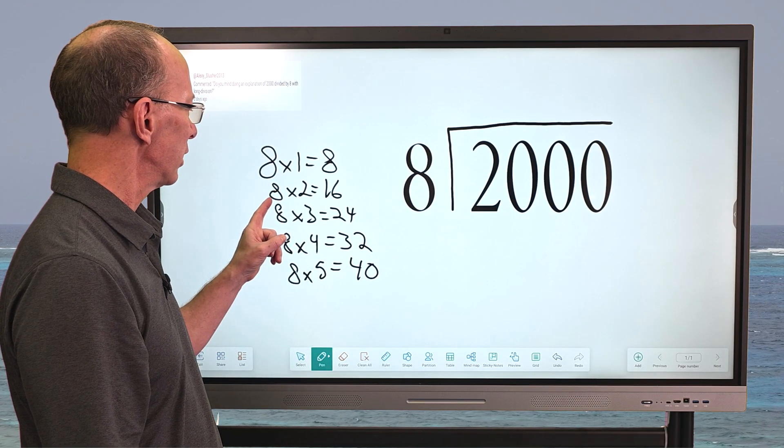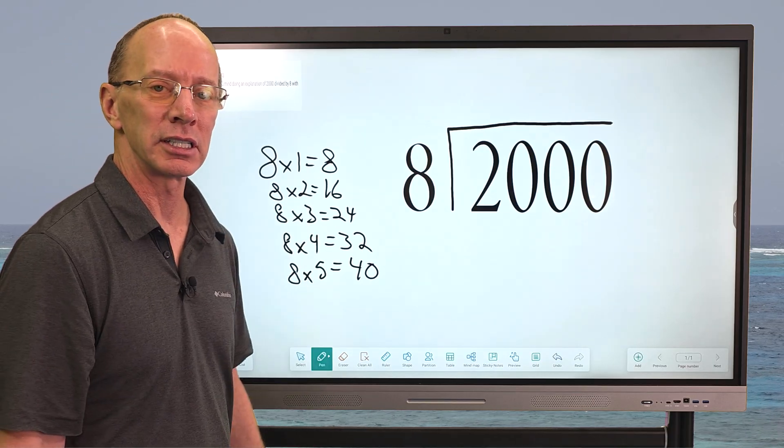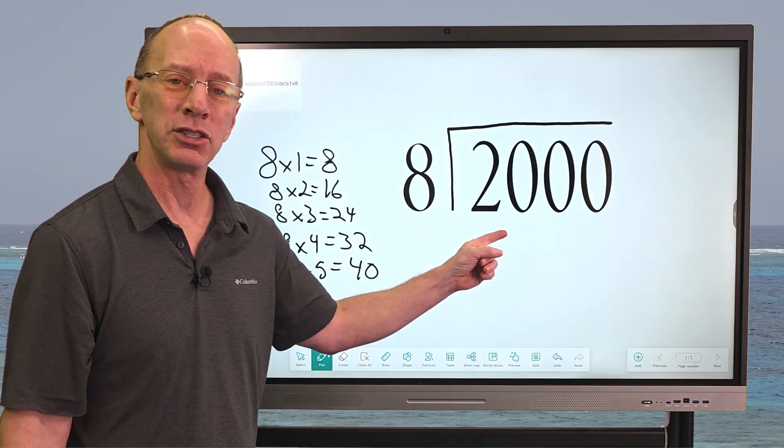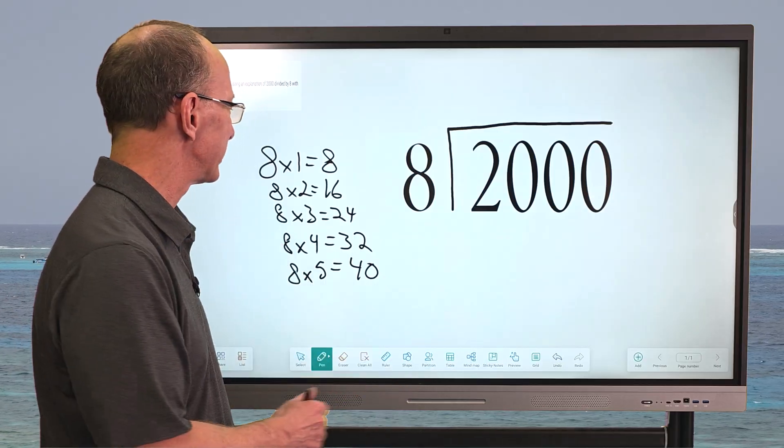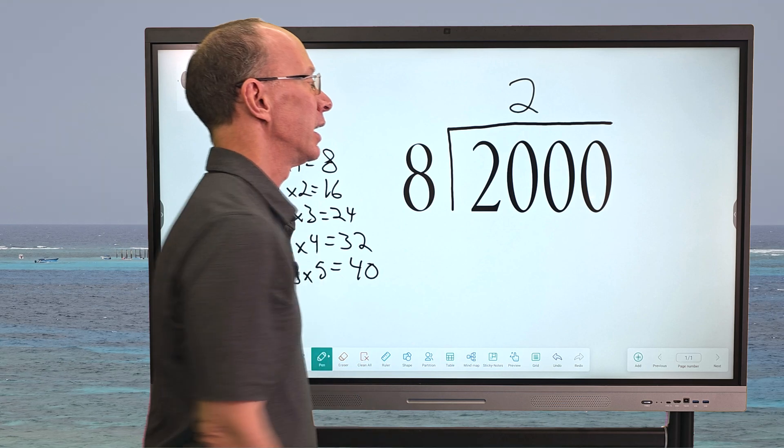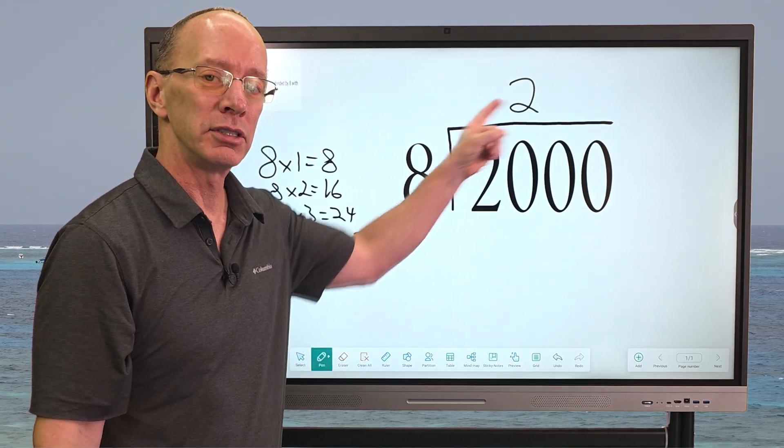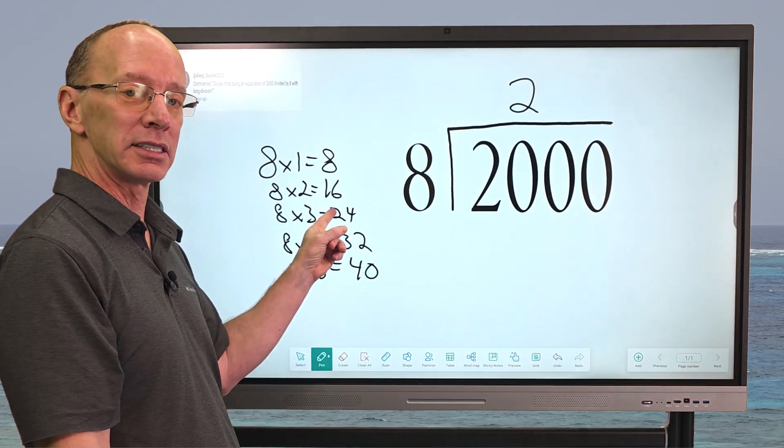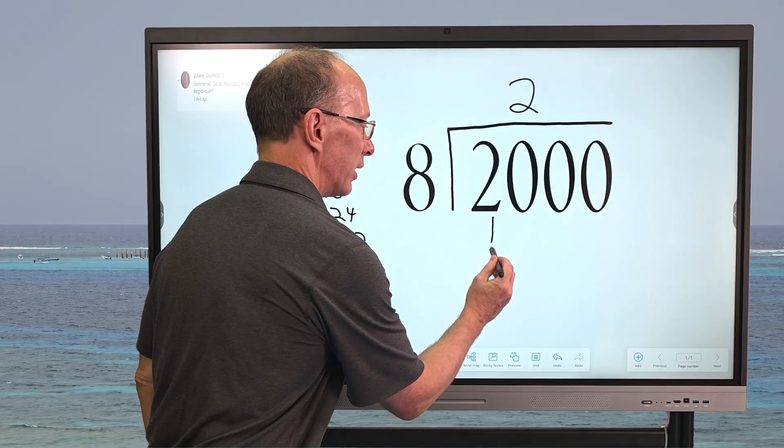And so let's go ahead and use 8 times 2 equals 16. Because 8 times 3 is 24, and that's too big. We want to keep with 16. So let's go ahead and put the 2 right here. And then what I'm going to do is multiply 2 times 8 equals 16. So I put 16 right here.